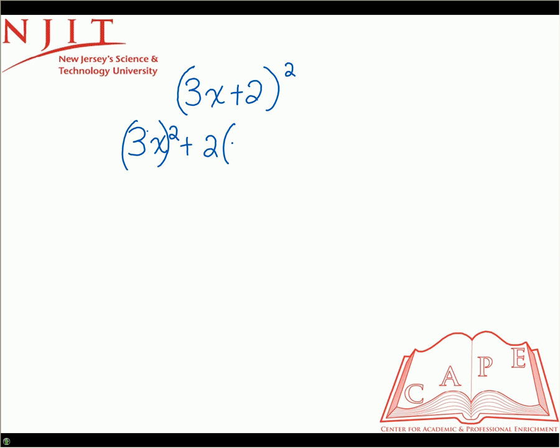So it's 2 times 3x times 2. And then the second term squared, which is just the 2 squared.